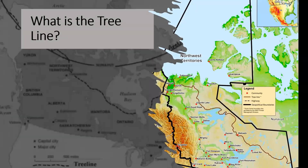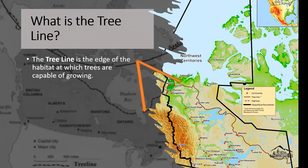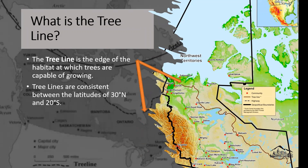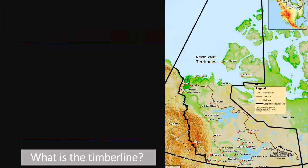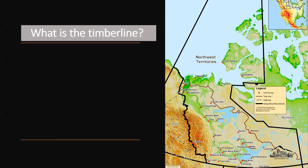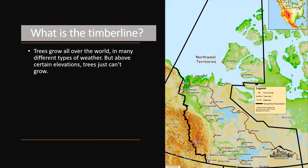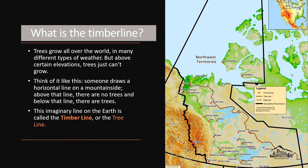The first question that comes to mind is: what is the tree line? The tree line is the edge of the habitat at which trees are capable of growing. Nothing will grow beyond this line. The tree lines are consistent between the latitude of 30 degrees north and 20 degrees south. Trees grow all over the world in many different types of weather, but above certain elevations, trees just cannot grow.